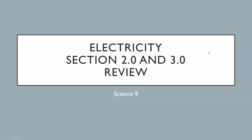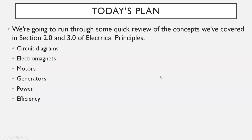Today we're going to do a quick review of electricity sections 2.0 and 3.0. The concepts we're going to run through are the ones we've been covering the last few weeks: circuit diagrams, electromagnets, motors, generators, power, and efficiency. Those last five concepts are all really intertwined and they'll all connect together quite well.